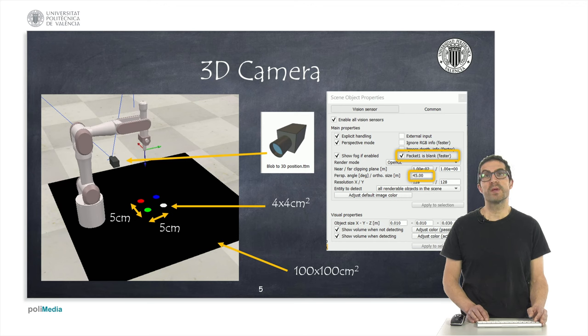We are going to configure a vision sensor as a 3D camera that will provide us with the x, y and z coordinates of the objects. CoppeliaSim includes, in its model library, a 3D camera named Blob to 3D position TTM.